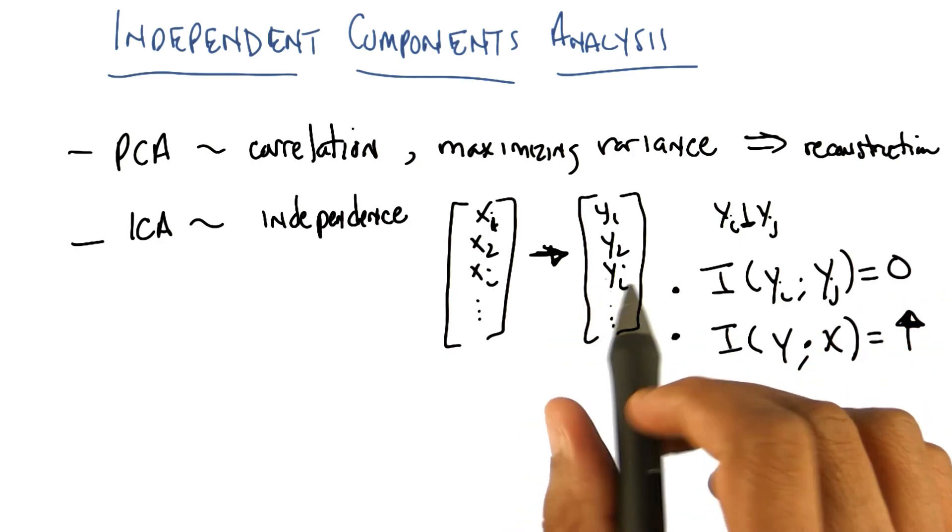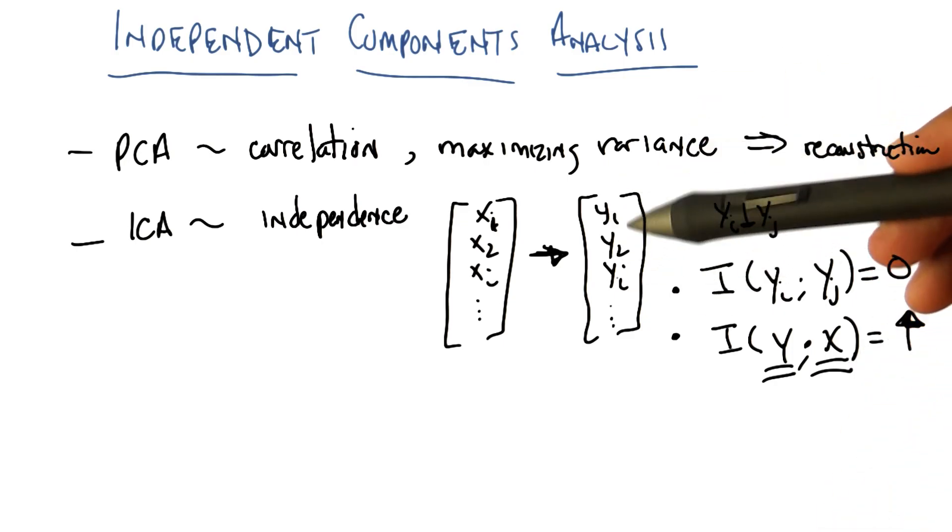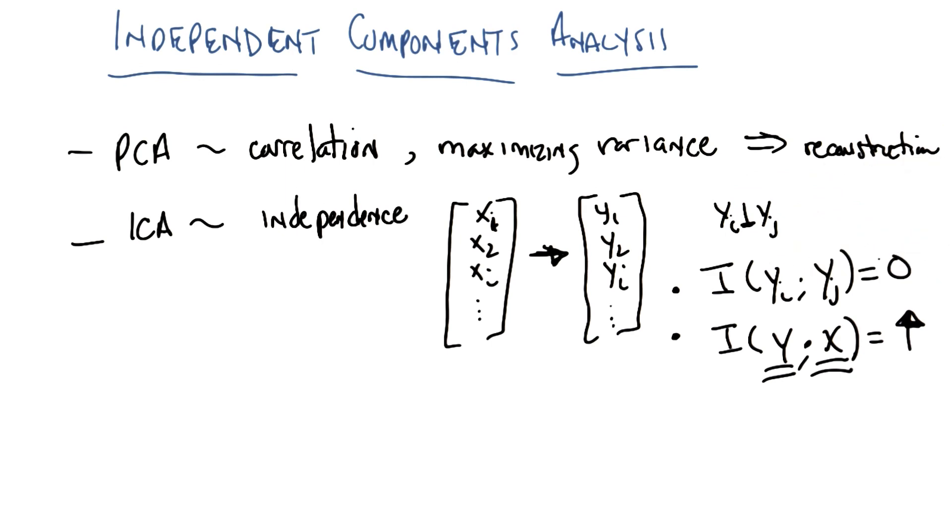So in other words, we want to be able to reconstruct the data. We want to be able to predict an X from a Y or a Y from an X, while at the same time making certain that each of the new dimensions is in fact mutually independent in a statistical sense.